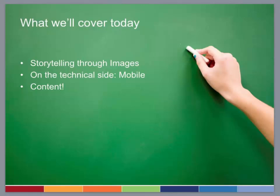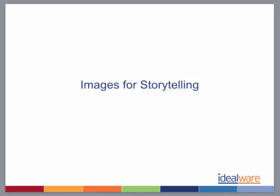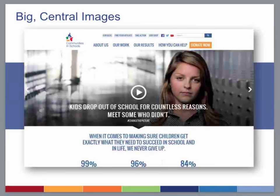Let's look at the first area: images for storytelling. One of the big trends is this trend around big central images. What we're talking about are websites — especially the homepage, but increasingly inside pages too — having a substantial amount of real estate, often more than half or three quarters, devoted to a single image. It's meant to provide a visceral, immediate communication of a central message.